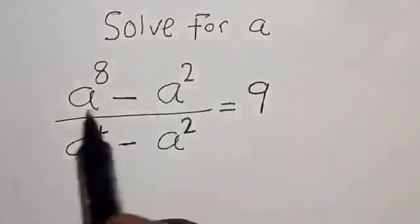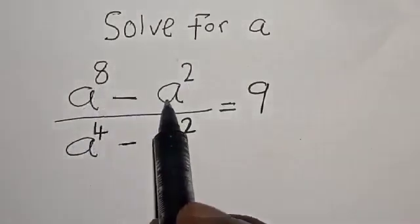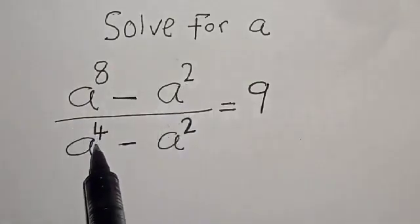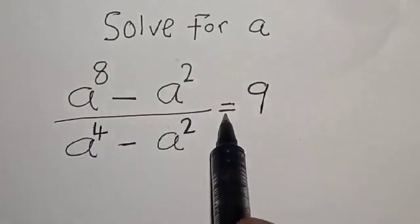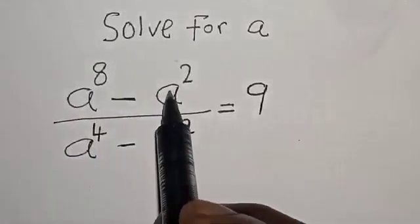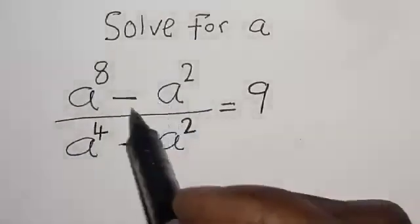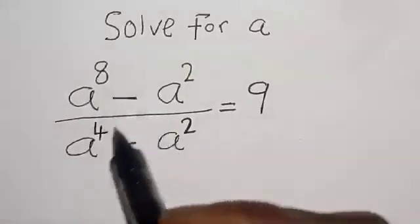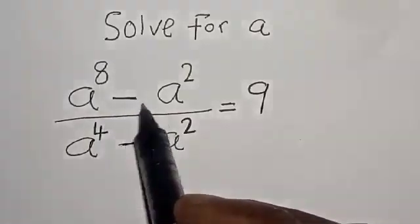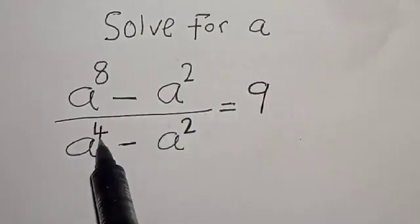Solve for x: a raised to power 8 minus a squared, divided by a raised to power 4 minus a squared, is equal to 9. Hi everyone, welcome to my class. In this class we want to find the value of a from this given equation.